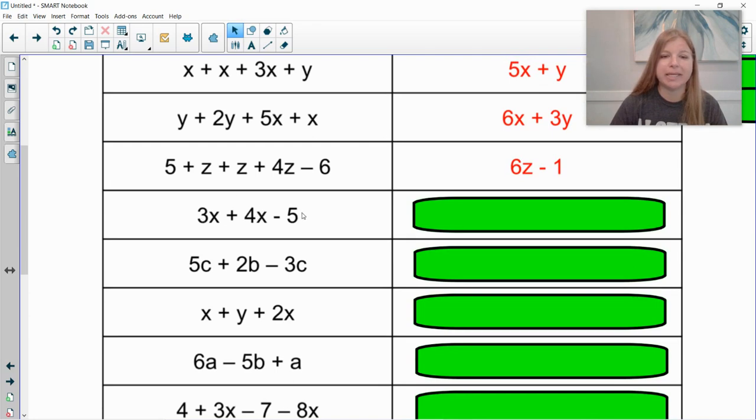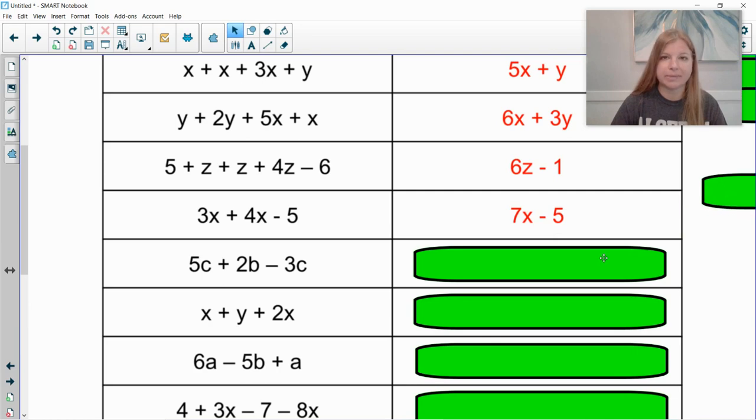3x plus 4x minus 5. I can combine these first two terms. 3x plus 4x is 7x. I used that in my example earlier. And so this would result in 7x minus 5.